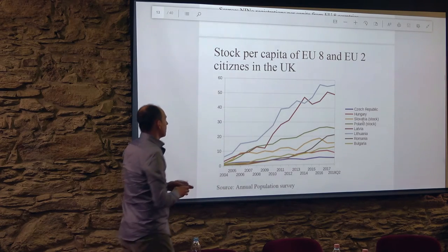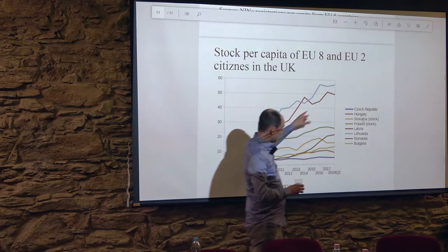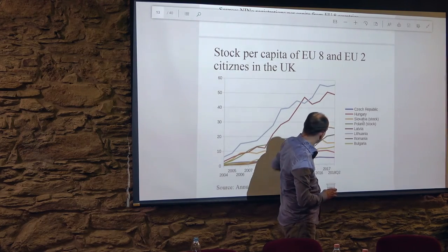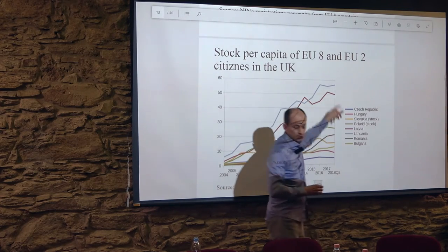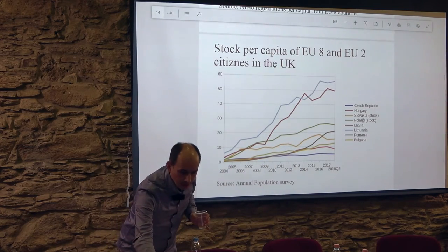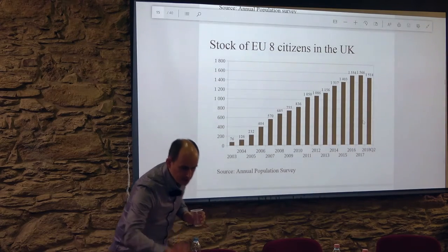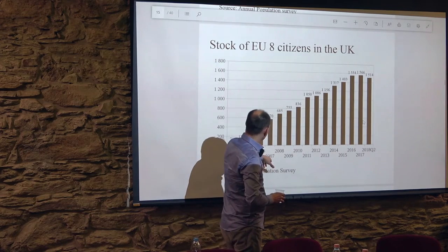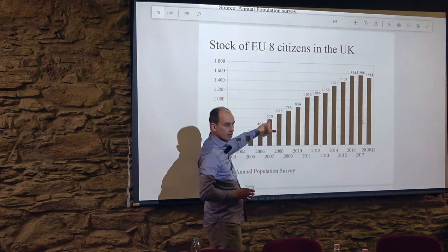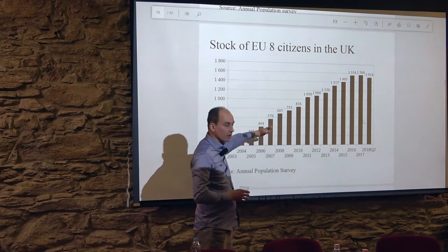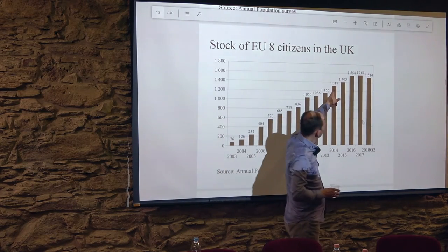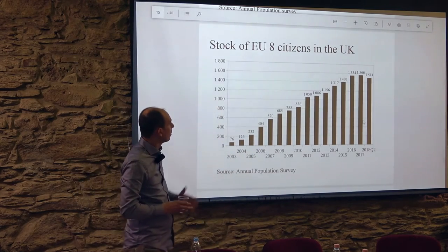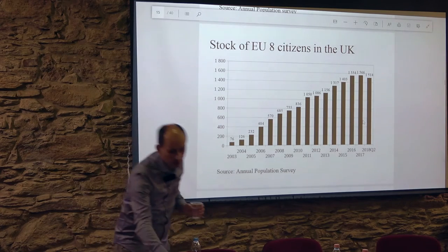Looking at the stock — how many people from Central and Eastern Europe were in the UK — by the time Romania and Bulgaria joined the EU there were over half a million, two thirds to three fourths of it from Poland. By the time of the decision to hold a referendum on leaving the EU, there were one and a half million Central and Eastern European people in the UK.